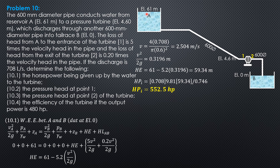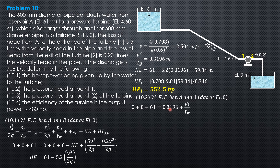For the pressure head at point 1, we write the energy equation between point A and point 1 — this is the simpler approach. With datum at elevation 0: velocity head at A is 0, pressure head is 0, elevation head is 61. This equals velocity head at 1 (0.3196), plus pressure head at 1 (unknown), plus elevation head at 1 (4.6), plus head loss from A to 1 (5 times the velocity head). So pressure head at 1 equals 54.48 meters.